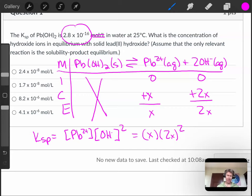That makes sense. And that's going to be equal to 2.8 times 10 to the minus 16. When you solve for x, x is going to be the concentration of lead ion. But that's not what it's asking us about here.